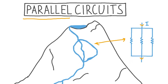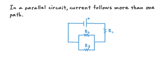So let's get right into it, and to start, we'll define what a parallel circuit is. Perhaps the best way to understand a parallel circuit is to know that in such a circuit, current follows more than one path. Another way to say this is that current splits or divides at some point in a parallel circuit.